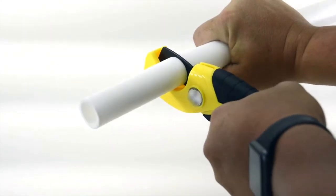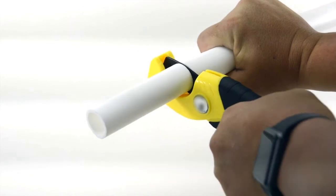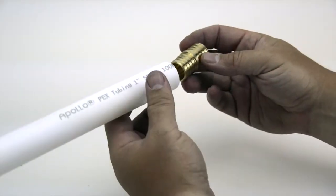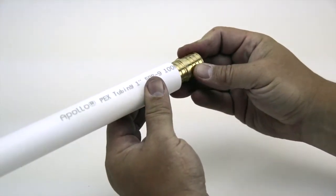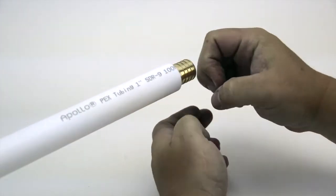Making a connection is easy. Start by making sure that the pipe is cut squarely. Slide the crimp ring onto the pipe and insert the desired PEX fitting into the pipe.